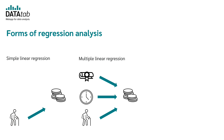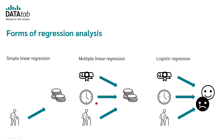Both forms of regression have in common that the dependent variable is metric. A metric variable is, for example, the salary of a person, the body size, the shoe size, or the electricity consumption. In contrast, logistic regression is used when you have a categorical dependent variable. Logistic regression is discussed in a separate video in this playlist.